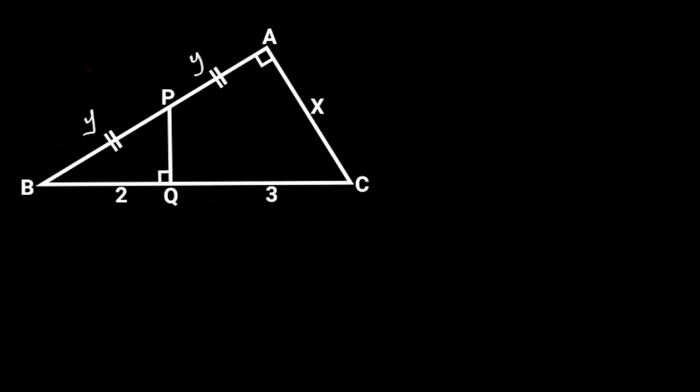Next let's apply Pythagoras theorem in triangle ABC. From Pythagoras theorem, BC squared is equal to AB squared plus AC squared. BC is equal to 2 plus 3, which is equal to 5. AB is equal to Y plus Y, which is equal to 2Y. AC is equal to X.